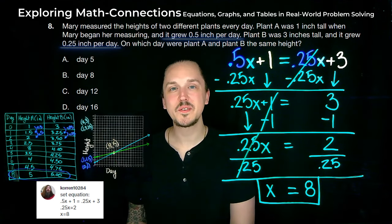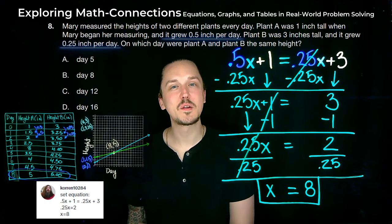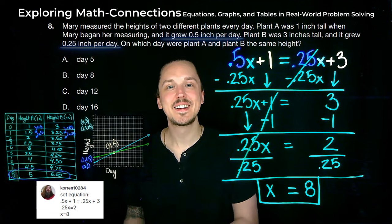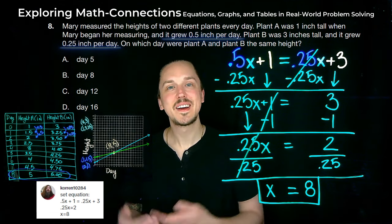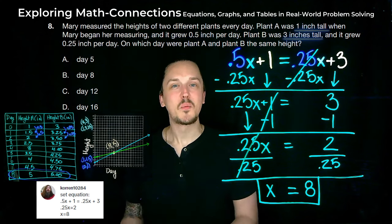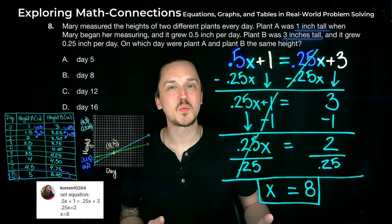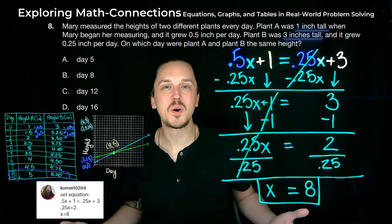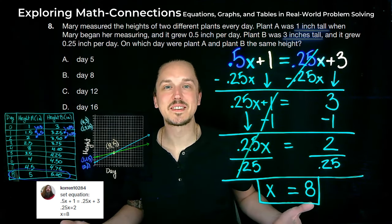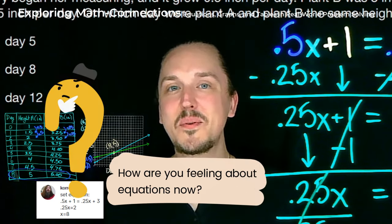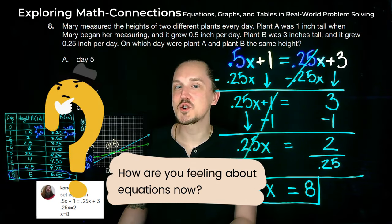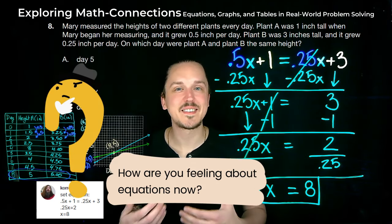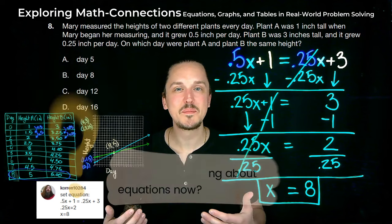Where do you see the 0.25 and the 0.5 in the table? Where do you see the 0.25 and the 0.5 in the graph? Where do you see the plus 1 and the plus 3 in the table? What about in the graph? How are you feeling about equations now — do they seem like a shortcut or a more in-depth way to dive into the problem?